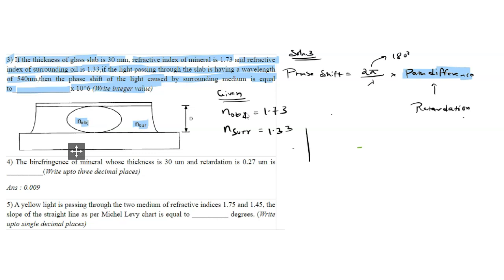The retardation formula, denoted by delta, is given by birefringence into thickness. Birefringence is n_object minus n_surrounding into thickness.